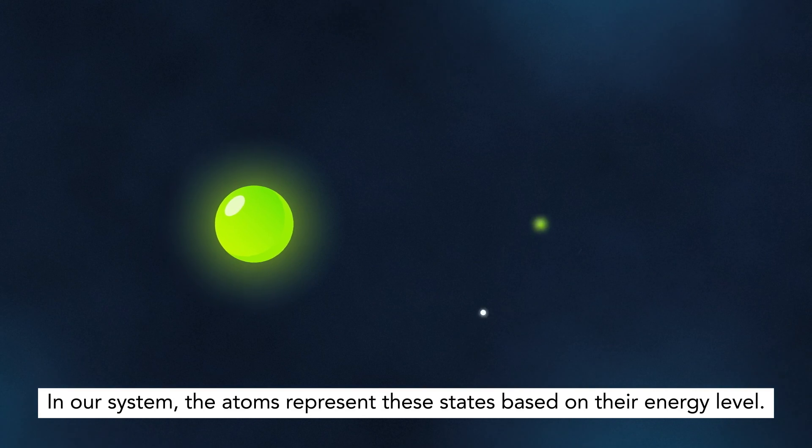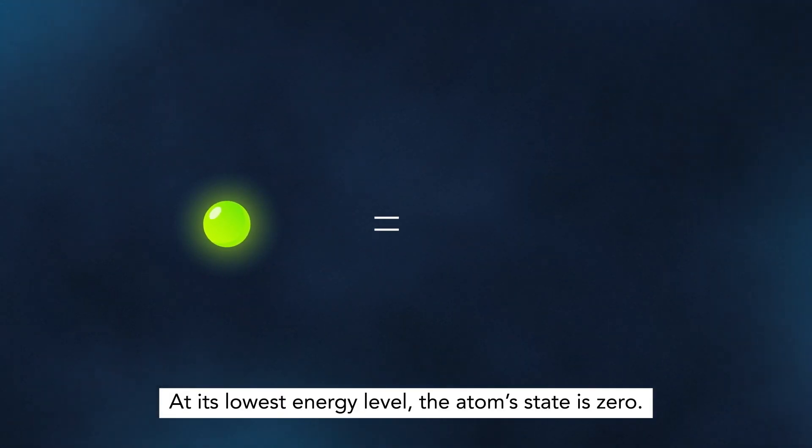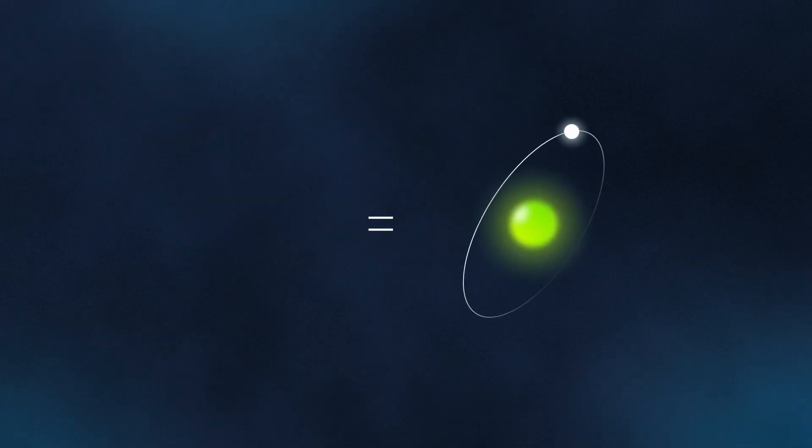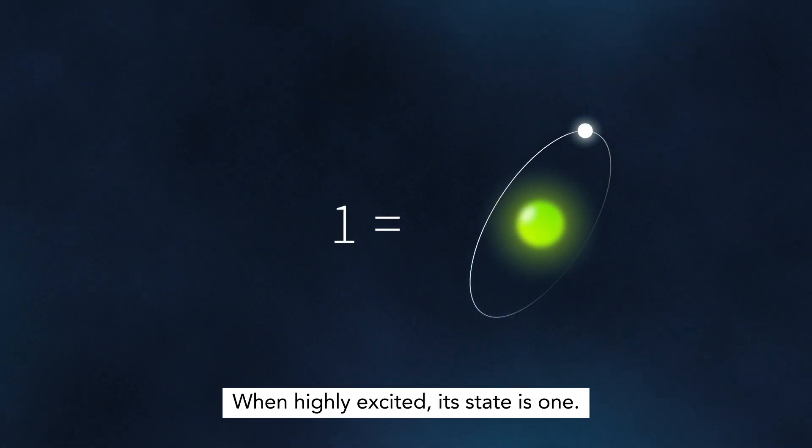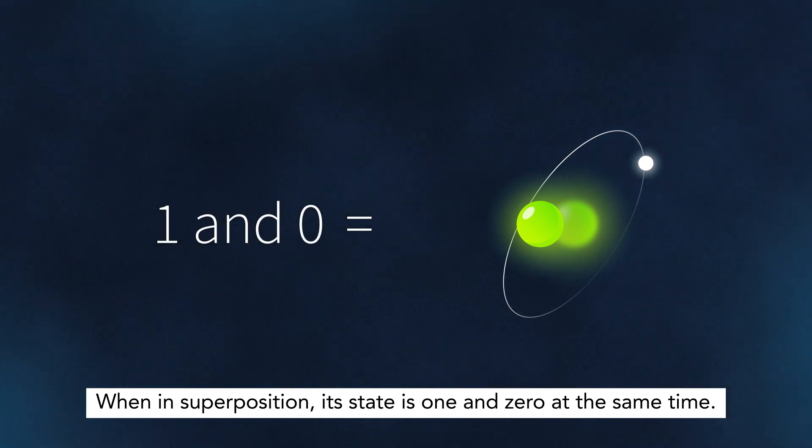In our system, the atoms represent these states based on their energy level. At its lowest energy level, the atom's state is 0. When highly excited, its state is 1. When in superposition, its state is 1 and 0 at the same time.